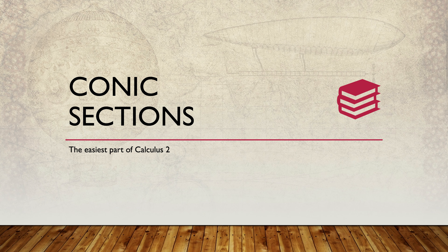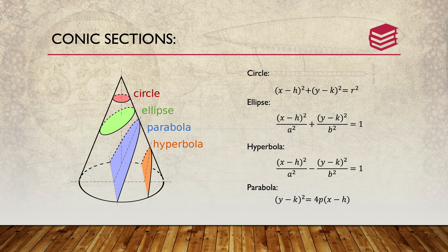Now we move into conic sections in Calculus 2, which tends to be the easiest section. There are four different kinds: circle, ellipse, parabola, and hyperbola. The formulas are on the side and right of the slide. More problems will be posted in the description so you can practice conic sections on your own.